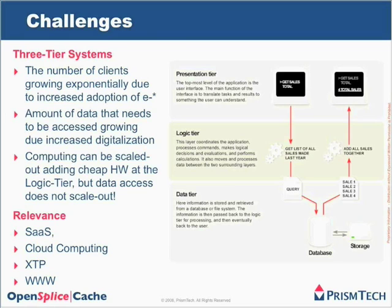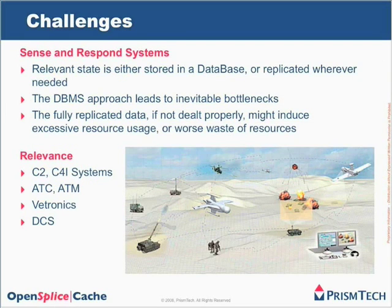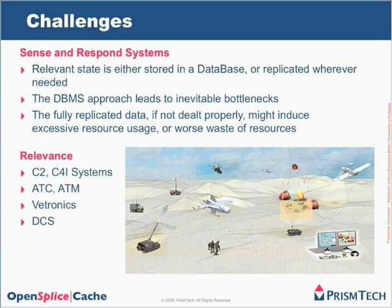Consider sense-and-response systems — systems in which you have to deal with the real world: sense something, understand what is happening, and react. The picture evokes a military scenario, but there are several different application domains in the civil world too. One of the key problems in these sense-and-response scenarios is identifying the state of the system and reacting. There is a concept of a state that needs to be accessible by several different parties, and the typical approaches are either to store this state in a database or replicate it wherever needed. Storing data in a database leads to inevitable bottlenecks, because a centralized or replicated database simply won't scale.